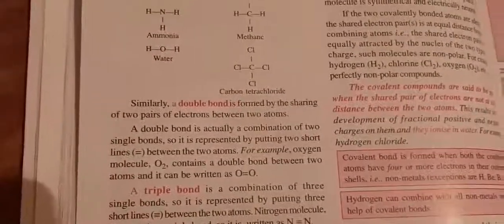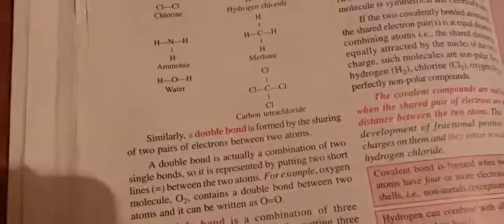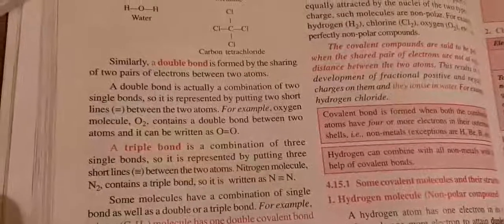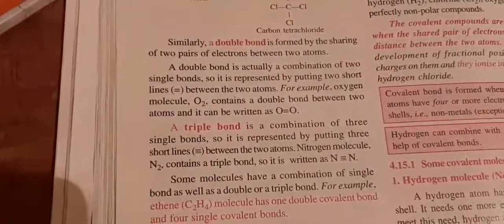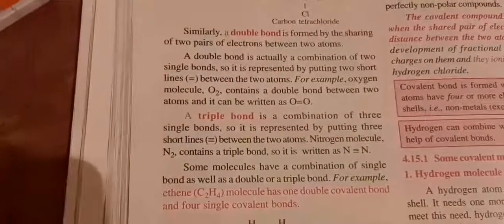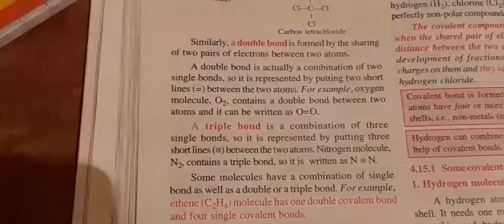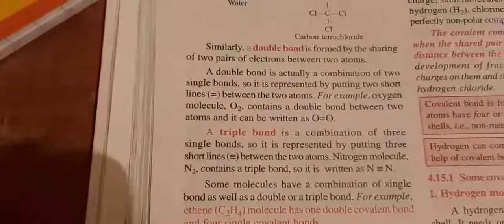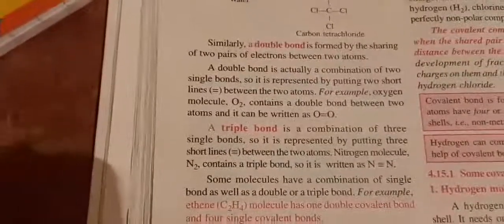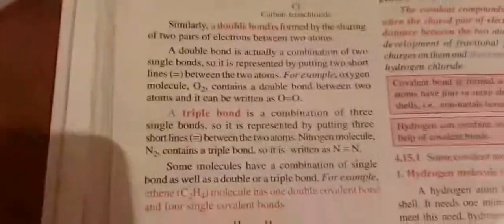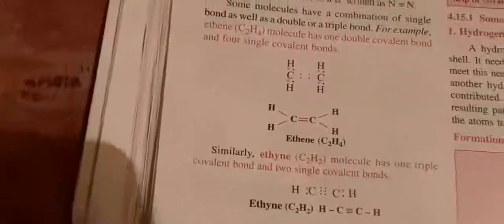Similarly, in double bond cases, we have the example of oxygen. In oxygen, the electronic configuration is 2, 6 — so two electrons are required for both oxygen atoms. They give two electrons each, resulting in the formation of a double bond. In triple bonds, we have the case of nitrogen, where each nitrogen has an electronic configuration of 2, 5. Atomic number is 7, so they require three electrons each. Each nitrogen gives three and receives three from the other, so three electron pairs are formed, resulting in the formation of a triple bond.